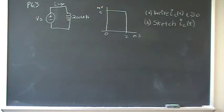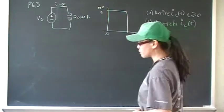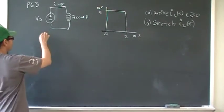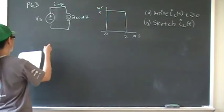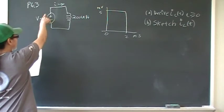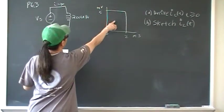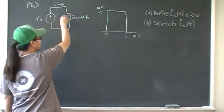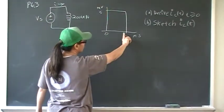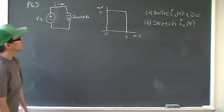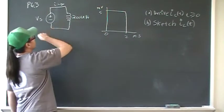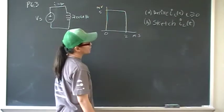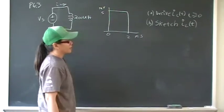This is problem number 3 of chapter 6. We are given a voltage shown here: from 0 to 2 milliseconds it is 5 volts, and then from 2 milliseconds on it's 0 volts. We want to find the current I for part A, and then sketch I for part B.